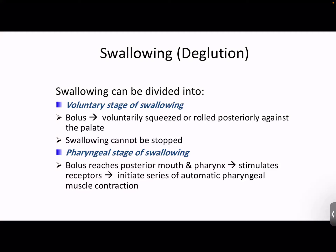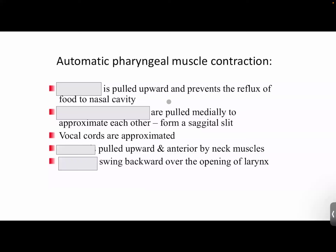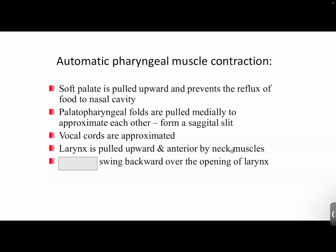Let's assess ourselves. What is the structure pulled upward to prevent reflux of food into the nasal cavity? It's the soft palate. What are the structures pulled medially to form a slit? The palatopharyngeal folds. What is pulled upward and anteriorly by the neck muscles? The larynx. And what swings backward over the opening of the larynx? The epiglottis.